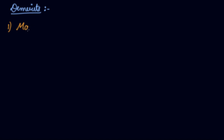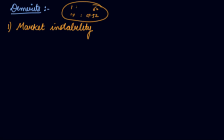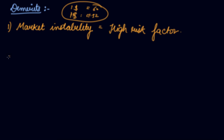Now the demerits. Demerit number one is market instability. For example, one dollar is equal to 64.60 rupees today and one dollar is equal to 65.52 rupees tomorrow — so this exchange rate is very flexible. This gives investors a high risk factor and causes market instability.